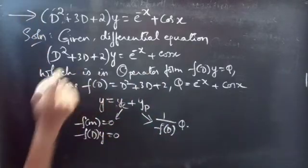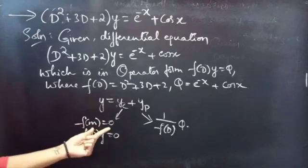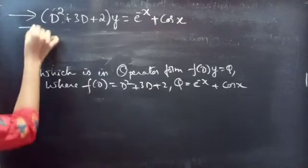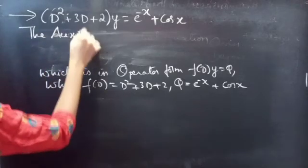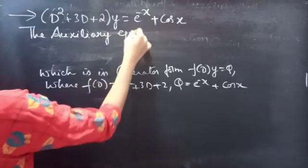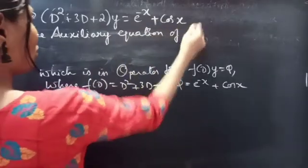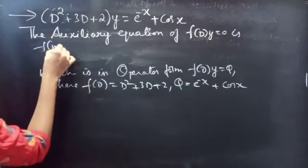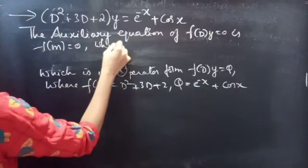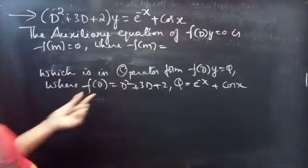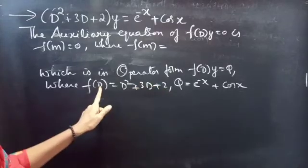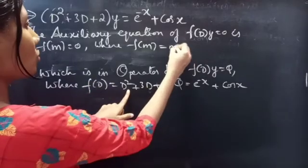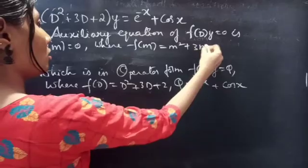Now let's find yc, the complementary function, using the auxiliary equation of the homogeneous equation. The auxiliary equation of f(D)·y = 0 is f(m) = 0, where f(D) = D² + 3D + 2. Let's replace the differential operator D with m, so f(m) = m² + 3m + 2.